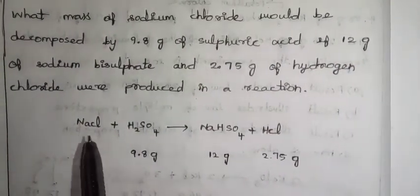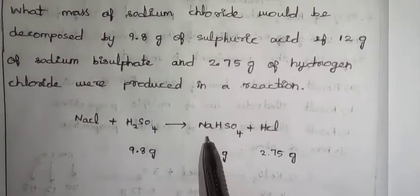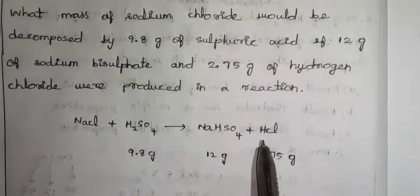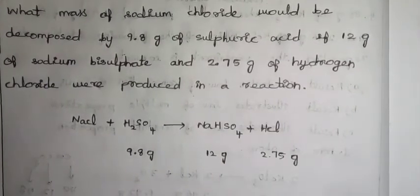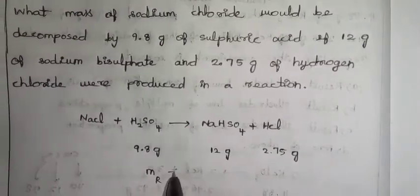It's 1 mole of NaCl reacts with 1 mole of sulfuric acid produces 1 mole of sodium bisulfate and 1 mole of HCl. That's why we apply law of conservation of mass. Mass of the reactants is equal to mass of the products.